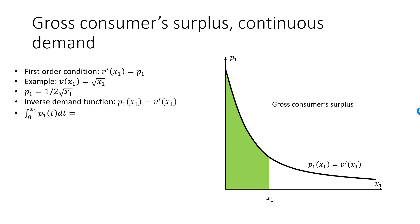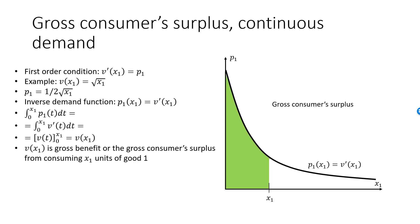With quasi-linear preferences, we know that the inverse demand function is V prime. When we calculate an integral, we find the primitive function of the integrand, that follows from the definition of a primitive function. To evaluate the integral, we need to evaluate the primitive function at the upper limit x1, and then subtract the primitive function evaluated at the lower limit. Since V of 0 is 0, we see that the integral is V of x1. So it doesn't matter if good 1 is discrete or infinitely divisible. The gross surplus, V of x1, is the area under the demand curve.